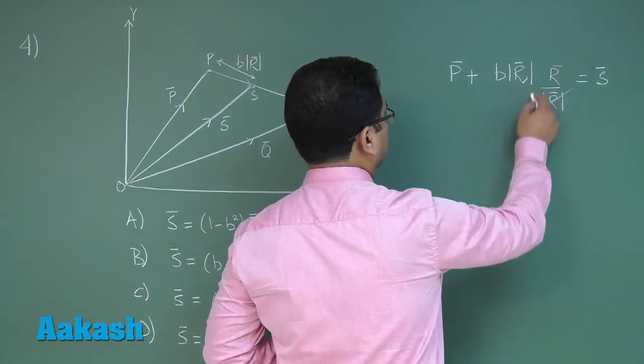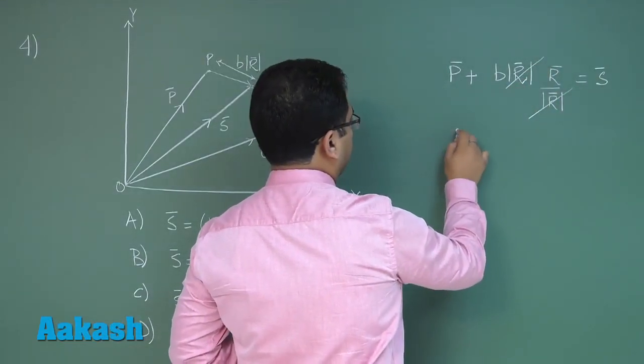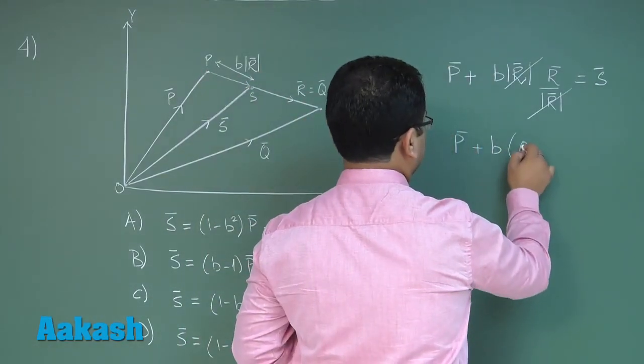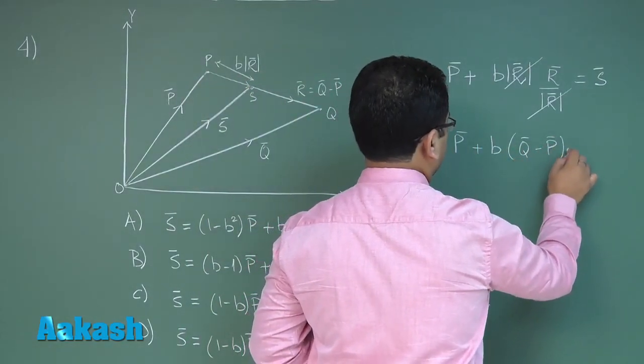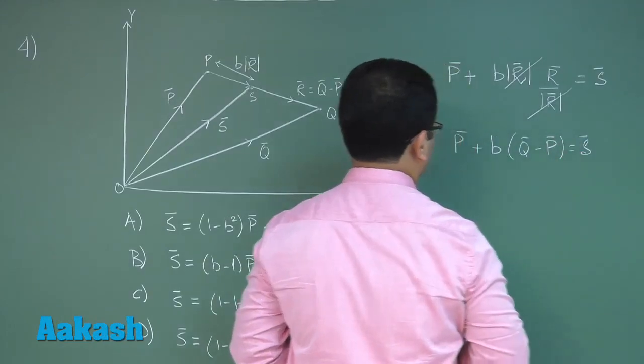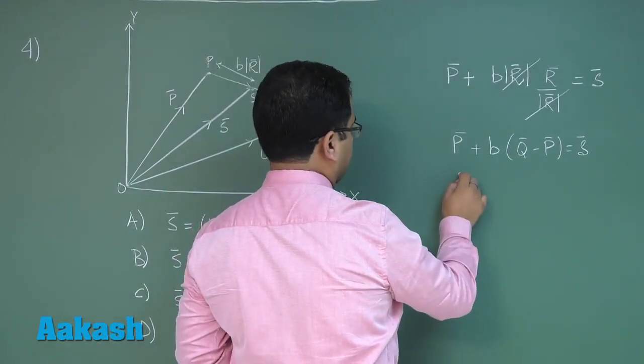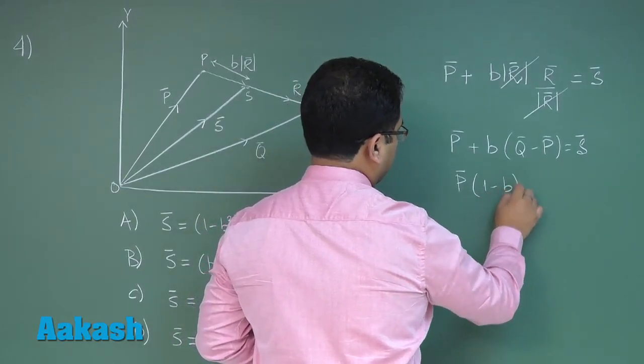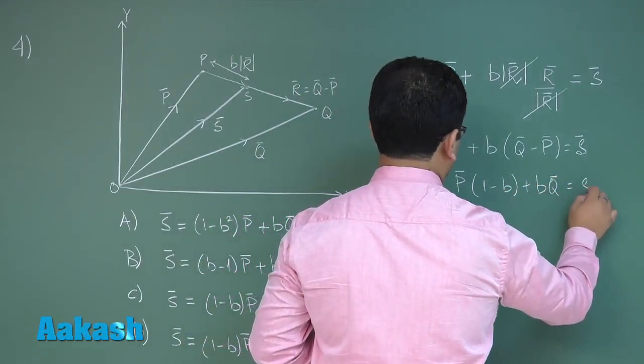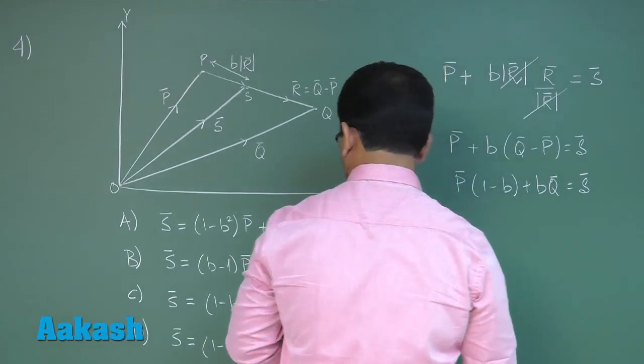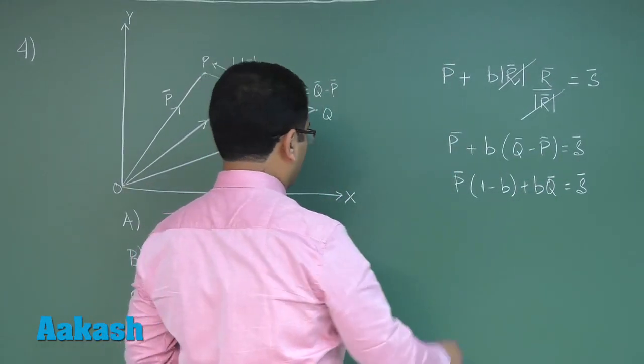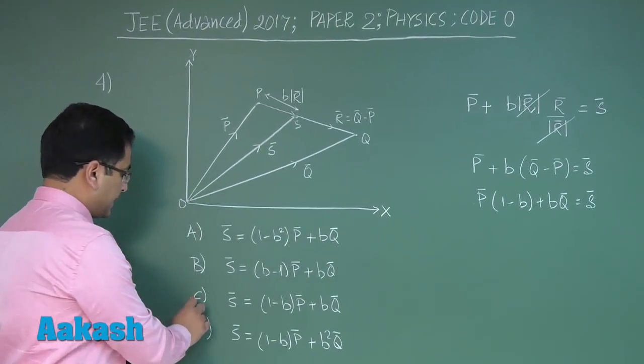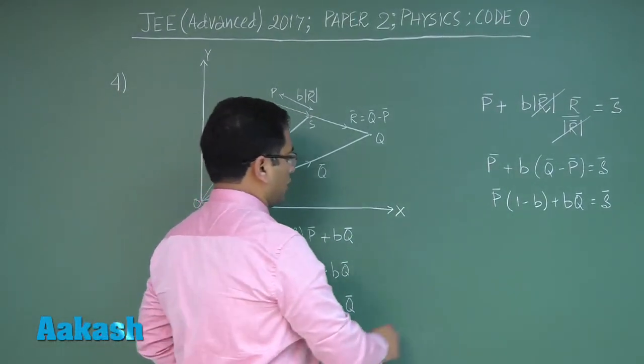Let's see - this magnitude part will get cancelled. P vector plus b r vector here can be written as q vector minus p vector equals S vector. Now let's arrange: p vector times (1 minus b) plus b q vector equals S vector. And the correct option for this matches with option C. So for this question, option C is the right answer.